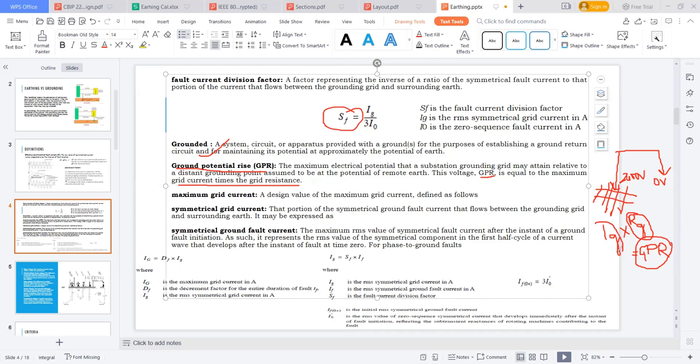How do I get this grid current? If I want to calculate grid current, the current equals SF times IF. IF is 3I₀.